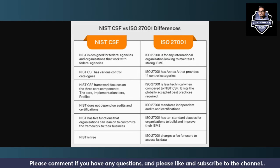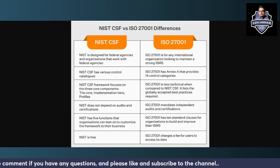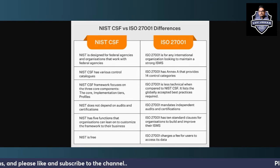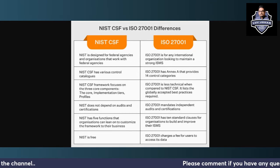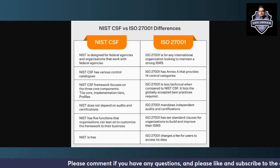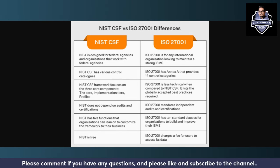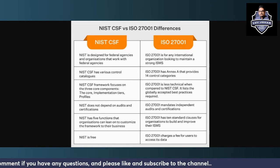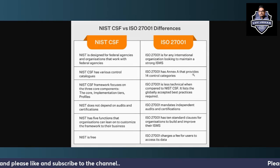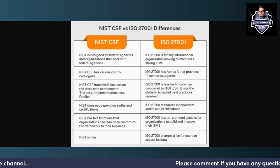NIST is free for anybody to use — it is provided by the United States of America as a free reference standard. However, ISO 27001 has a cost: you have to pay a fee to get the standard and make payments on the ISO standard website.